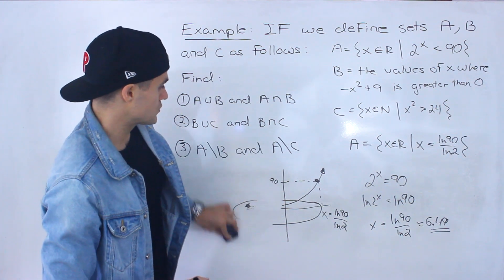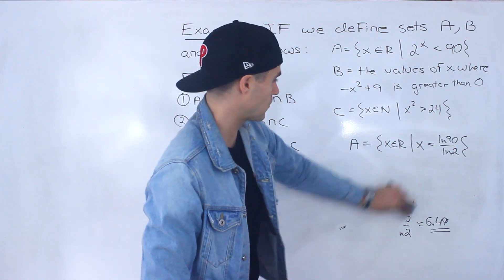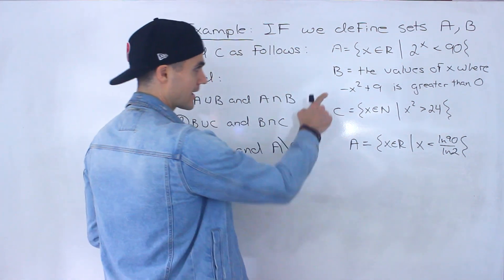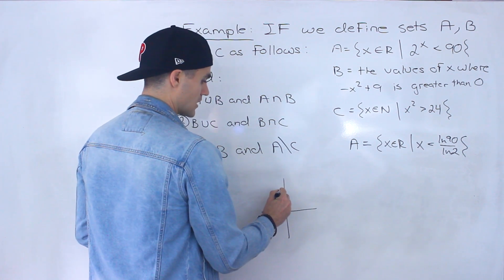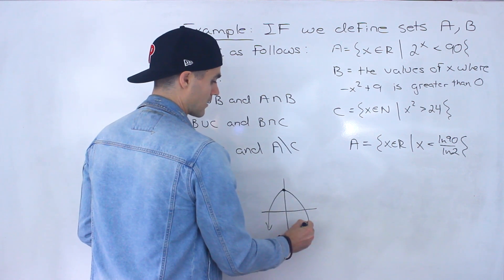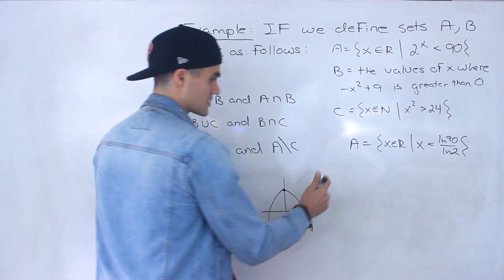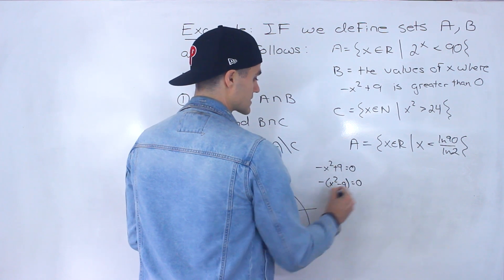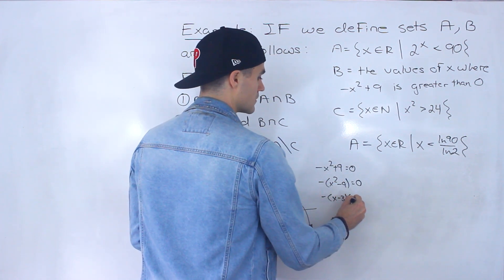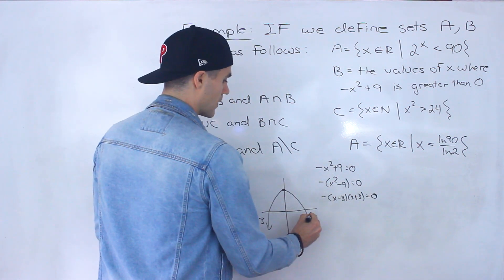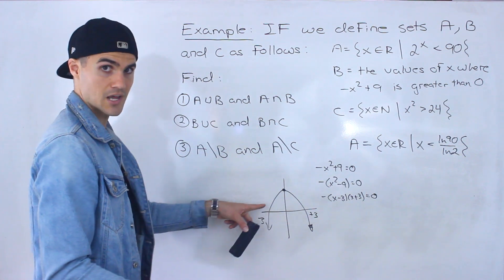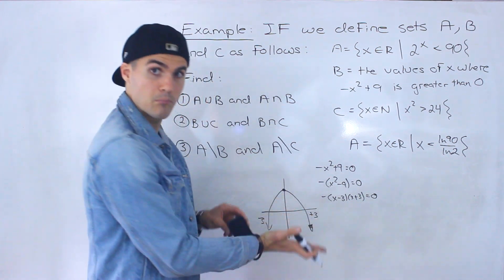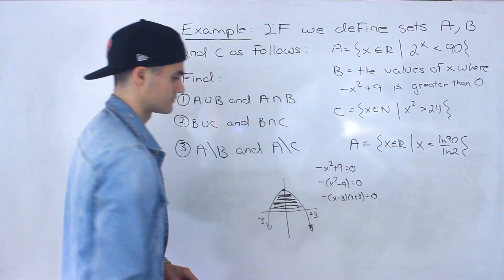Now let's move on to set B. We have the values of x where negative x squared plus 9 is greater than 0. Notice that negative x squared plus 9 is just a quadratic — it's been shifted up by 9 units and it's opening downward. We can find the x-intercepts because we have negative x squared plus 9. When is that going to equal 0? We can factor out a negative — that's going to be a difference of squares. So we get negative 3 and positive 3 as the x-intercepts. The function is going to be greater than 0 above the x-axis.